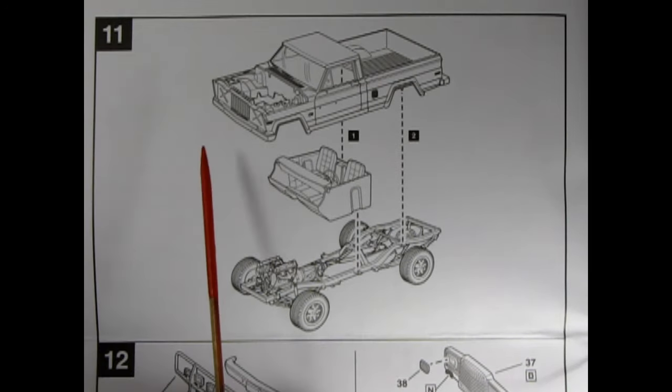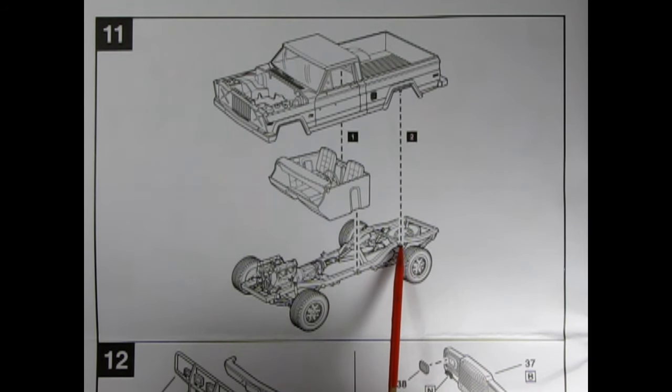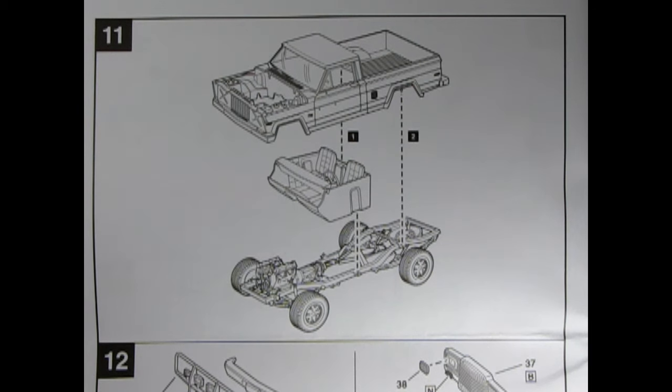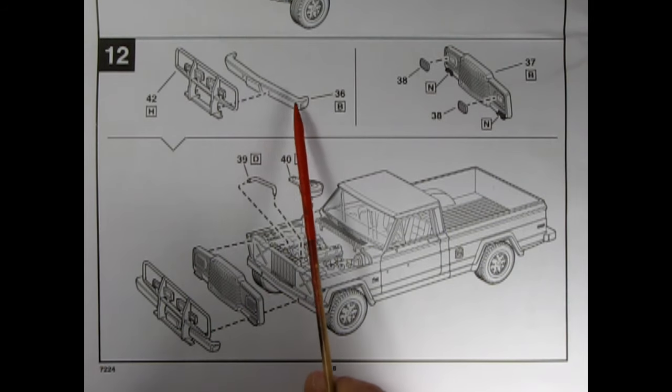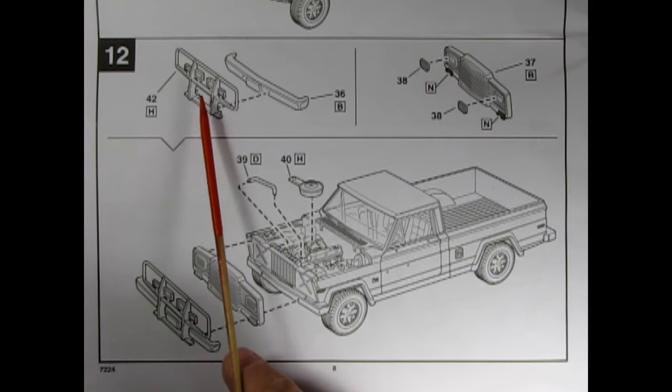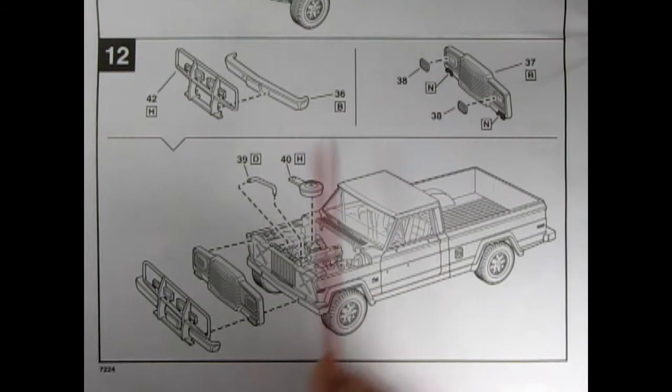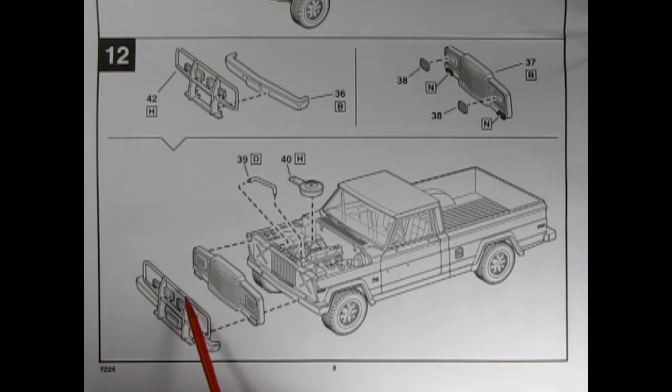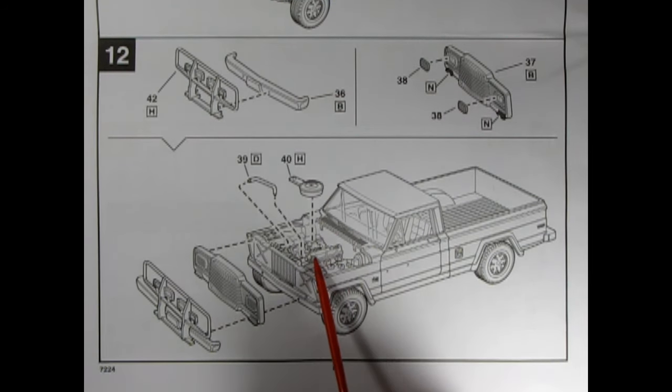Now here we have panel 11, and this is the body and our interior going down onto the chassis. So you're going to sandwich all that together and glue it in the spots where it's going to be gluing. Panel 12 shows the final details of our body. We have the bumper with this cool overrider with all those fog lamps in there. Then we've got our grille and the headlights going into the grille, as well as our parking lenses. Here we have the upper radiator hose being put in and our air cleaner being dropped on as a final part.